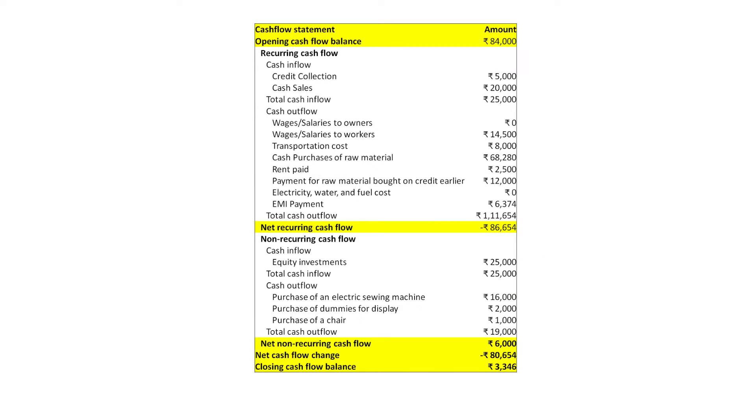Sundari is already paying an EMI, so she does not want to take an additional loan. She has some savings which she was anyway planning to invest in the business to take care of the fixed capital. To manage the working capital in the first two weeks, she decides to delay her own salary and take it towards the end of the month once the revenues come in. Based on these decisions, she once again prepares the two-week cash flow shown here. The closing balance is now positive, but it is a small number. Sundari plans to be very careful about cash outflows during those two weeks.